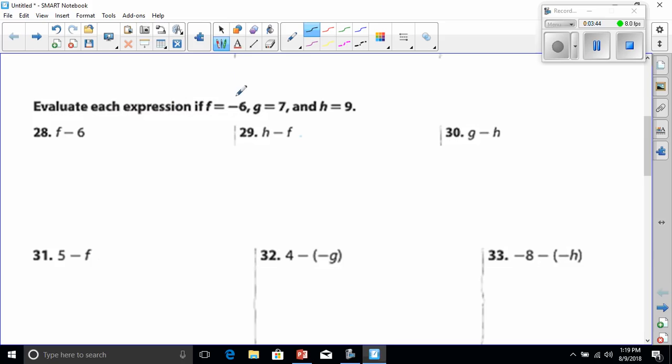Let's go to number 28. Number 28 says evaluate each expression if f is negative 6, g is 7, and h is 9. So f is negative 6. It says here f minus 6, so we're really having negative 6 minus 6. Once again on the number line we know that I'm going to the left negative 6, and then because I'm minusing another 6 I have to go where the negatives are, and that's going to add another 6 onto that which makes a negative 12. 6 plus 6 is 12. Since both numbers are negative, we know our answer is negative 12.